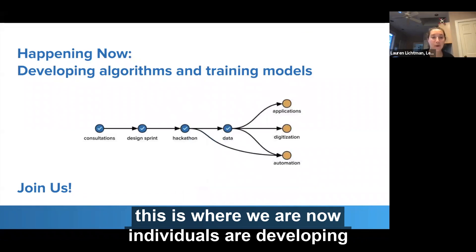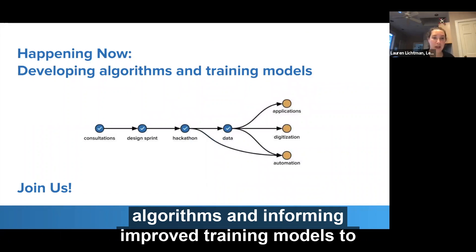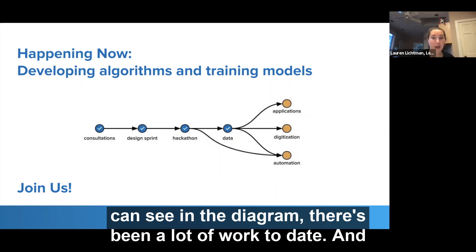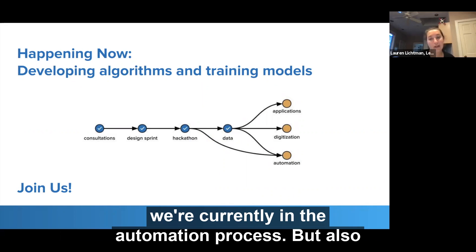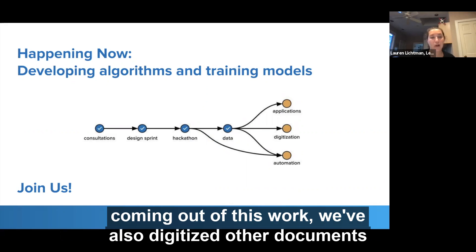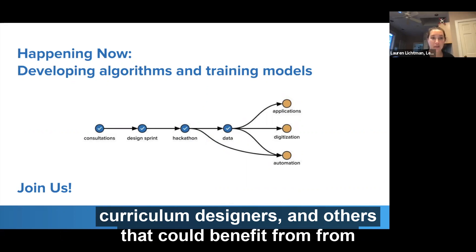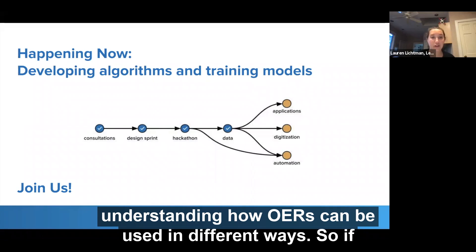And this is where we are now. Individuals are developing algorithms and informing improved training models to continue building this tool. As you can see in the diagram, there's been a lot of work to date and we're currently in the automation process. Coming out of this work, we've also digitized other documents and identified other public goods beneficial for curriculum designers and others who could benefit from understanding how OERs can be used in different ways.